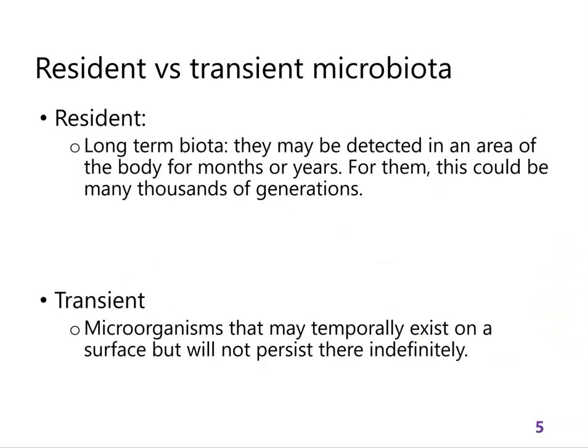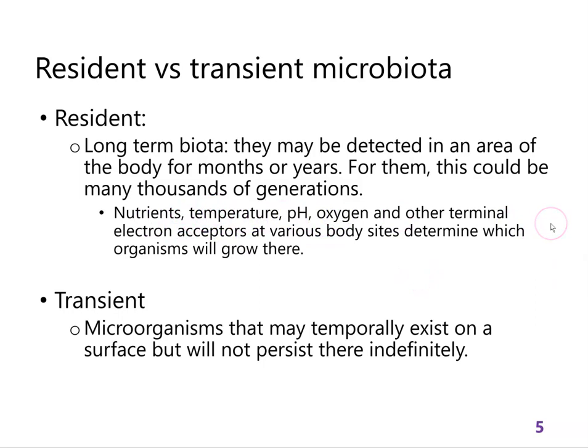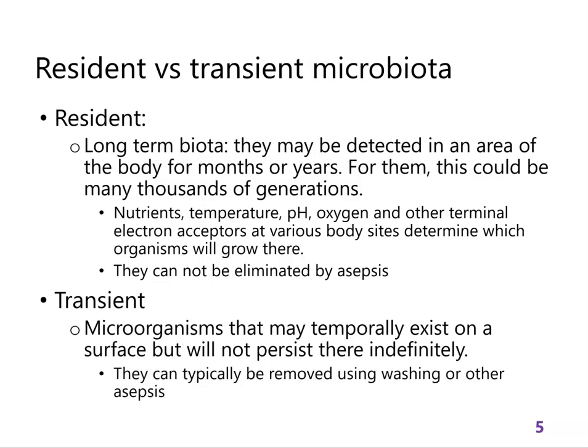Resident microorganisms are controlled by all the things you know that control bacterial growth — we can understand which microorganisms grow in different parts of the gut based on nutrients and oxygen levels, and we can understand vaginal microbiota based on pH and nutrients. An important distinction is that the resident microbiota cannot be eliminated by antisepsis. You can't wash them off permanently, and you can't completely remove the human gut microbiota by taking antibiotics — there are too many places they can hide. The transient ones, however, you can remove; those are what's typically eliminated by washing or antibiotics.